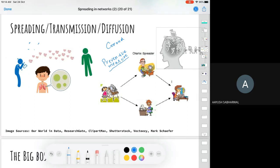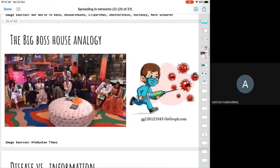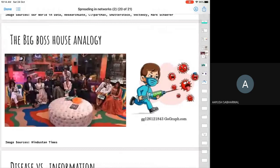In this particular example I just took, the networks which we are talking about are different for the spread of a disease and the spread of an information. Let me make this network the same and again ask you a question. I just named it as the Big Boss house analogy. You can consider it to be any game like Splitsville or even Roadies, where certain people they are isolated in a home. Let's say you are in this Big Boss house. You do not have any online devices to talk to your friends. If you want to talk to somebody, you'll have to go to them and talk to them.